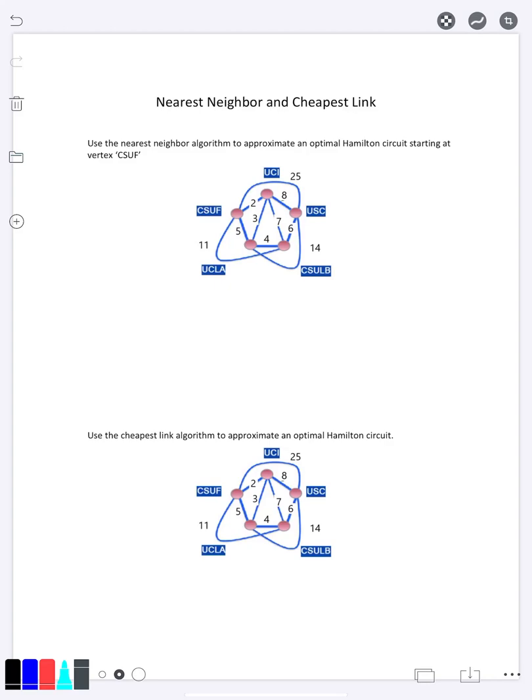So for nearest neighbor, we have to pick a starting point. Anytime I actually give you a problem here, I will tell you the starting point so that everyone has the same answer. The idea is you're going to look at your graph and you're starting at Cal State Fullerton right here. You say, okay, I want to know which of my neighbors, in that case the other four colleges here, which of them is the closest?